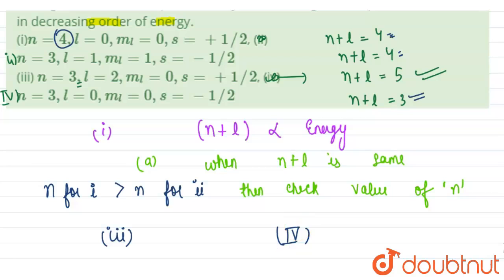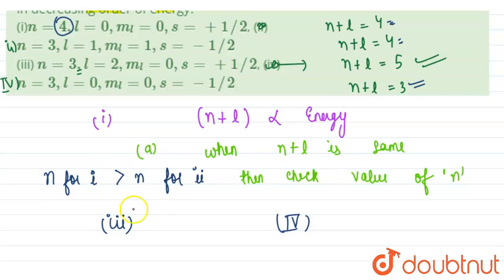And among first and second, the first will have higher energy because it has a higher value of n. So energy of first will be higher, then we will have second.